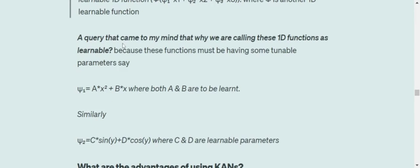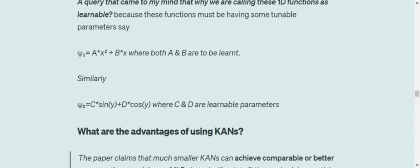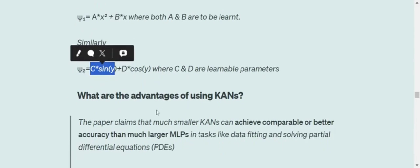A query might be coming to your mind that why these 1D functions are called learnable. Because these functions are having some parameters that are tunable, that are to be learned. For example, Omega 1 might look something like this: A into X square plus B into X. It is a function, do remember that. Similarly, Omega 2 might look something like this: C into sin Y plus D into cos Y. These are examples, do remember this. In reality, things are a little complex. So these constants, these values CD, AB, are now to be learned instead of scalar values.